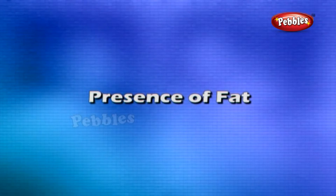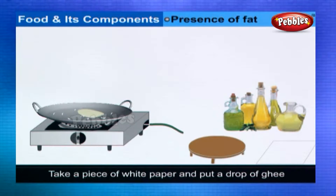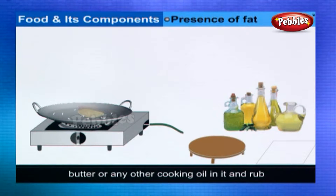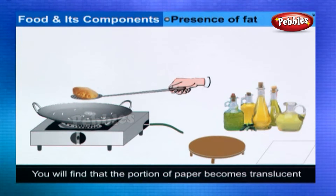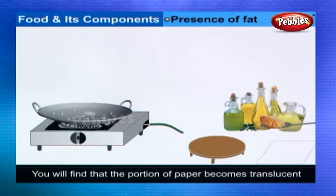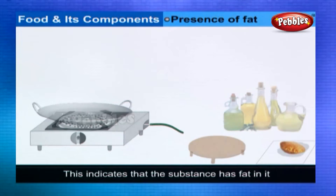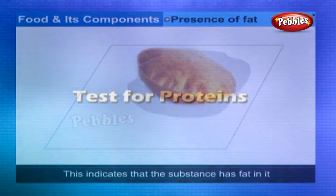Presence of Fat: Take a piece of white paper and put a drop of ghee, butter, or any other cooking oil on it and rub. You will find that the portion of paper becomes translucent. This indicates that the substance has fat in it.